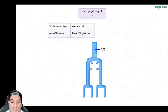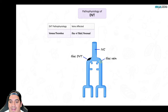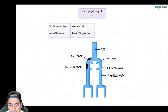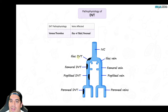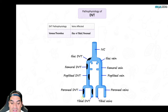Starting from the inferior vena cava going down into the iliac veins, a clot there would be an iliac DVT. Further down in the femoral vein would be a femoral DVT, popliteal vein a popliteal DVT, and peroneal veins a peroneal DVT. Anything above the popliteal bifurcation — popliteal, femoral, iliac — is a proximal DVT. Below that is a distal DVT. Tibial and peroneal are distal; femoral, popliteal, and iliac are proximal.